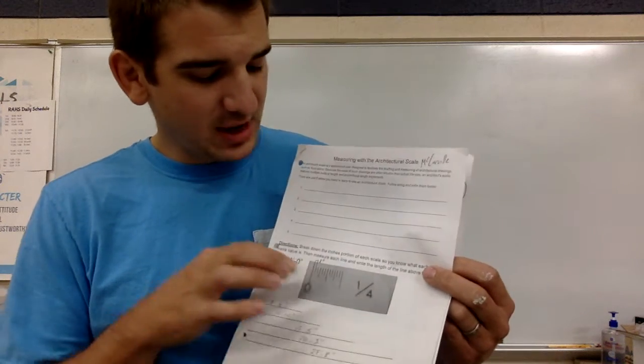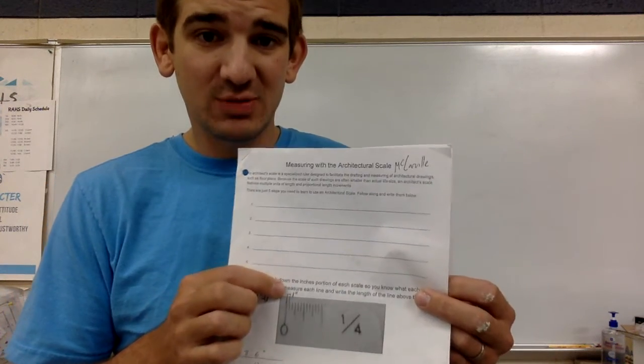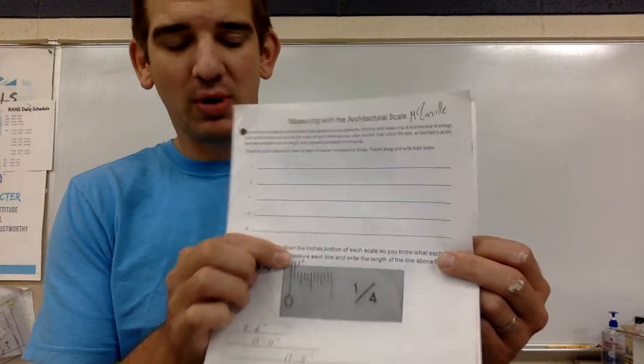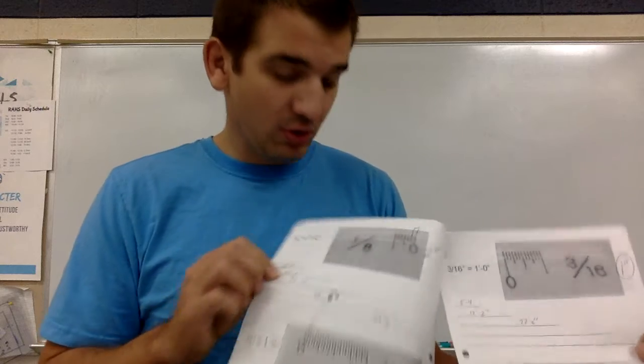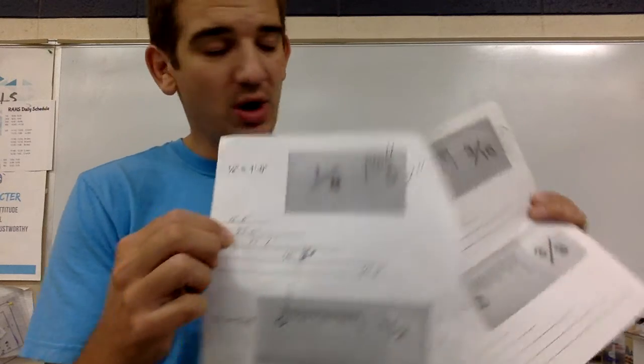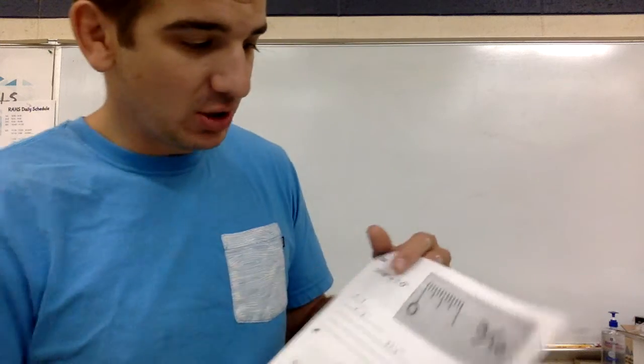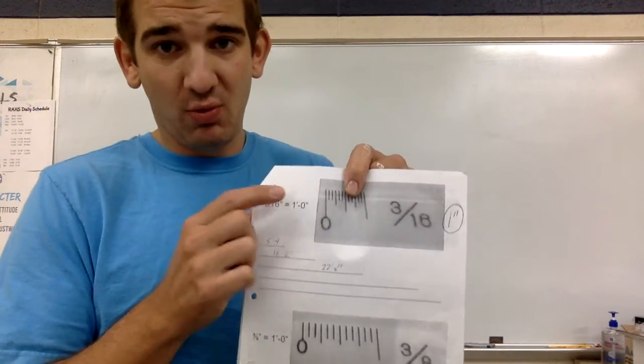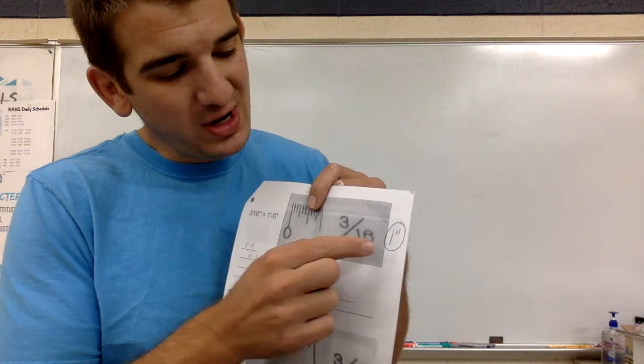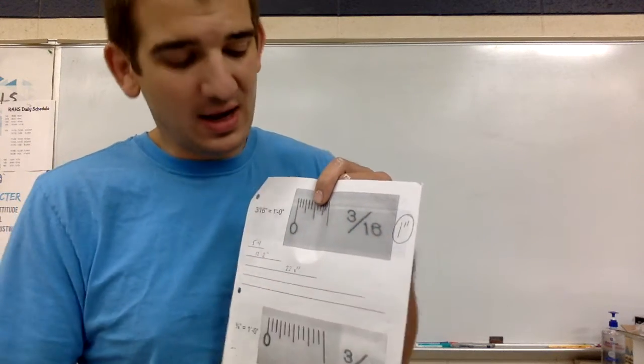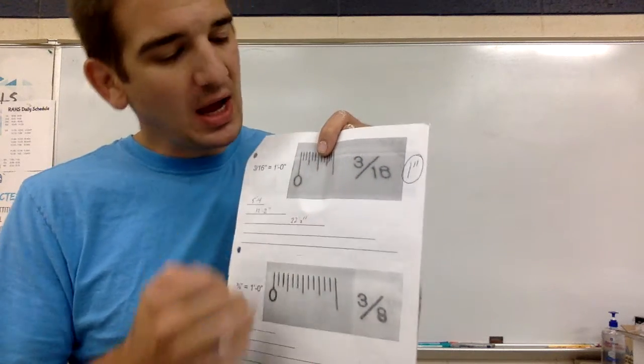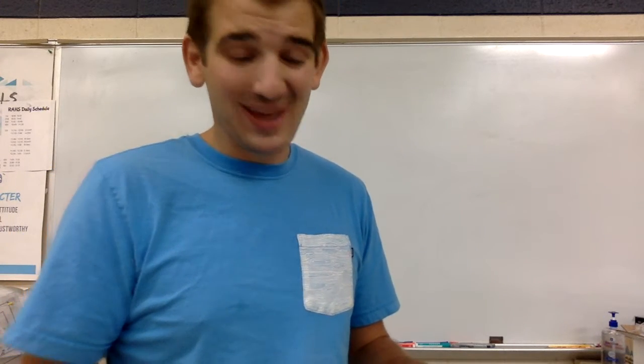In the quarter inch scale it was equal to one inch so it's smart to put that somewhere on your paper whether it's here or over here, doesn't really matter. We got to work through one-eighth and one-half and then I gave you guys time to work on your own. So we want to make sure that for every scale we know what each mark is equal to and we want to be able to measure five lines, all five lines with that scale.